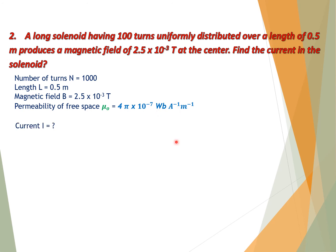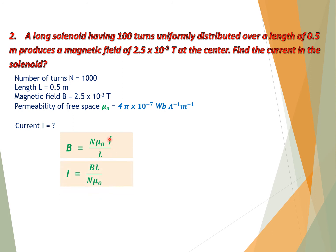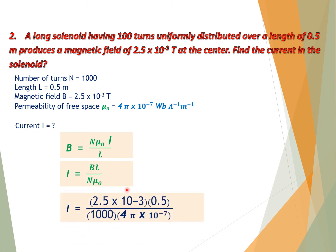We need to calculate current I. Using the relation B = Nμ₀I / L, solving for I: I = BL / (Nμ₀). Putting in all the values and solving, we get current I = 0.99 ampere, approximately 1 ampere. This is the current in the solenoid.